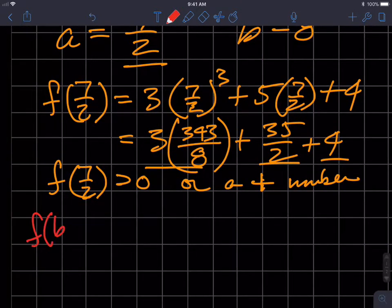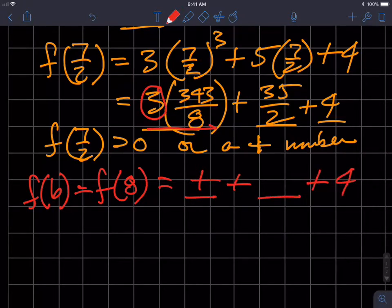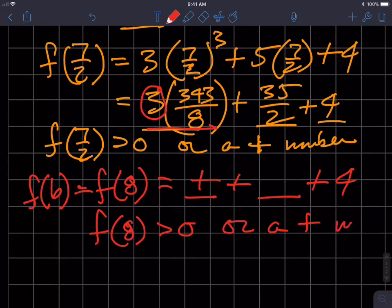So f of b is equal to f of 8, and I already can see what's going to happen here. If I do 8 cubed, that's going to be a positive number multiplied times a positive number. So I'm going to get a positive term plus another positive term plus 4, which means f of 8 is greater than 0, or a positive number.